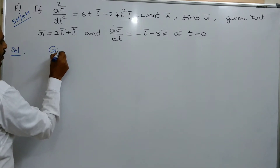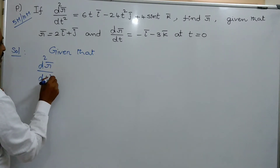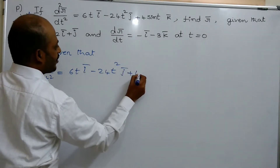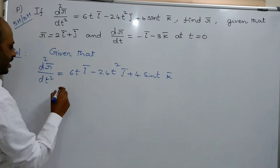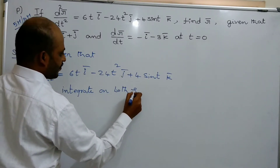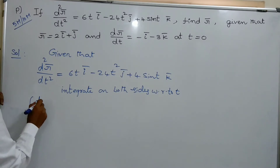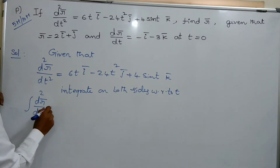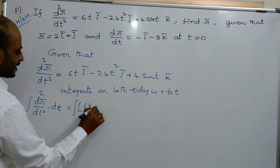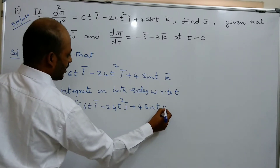Given that d²r̄/dt² equals 6tī minus 24t²j̄ plus 4sin(t)k̄. Integrate on both sides with respect to t: integral of d²r̄/dt² dt equals integral of (6tī minus 24t²j̄ plus 4sin(t)k̄) dt.